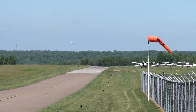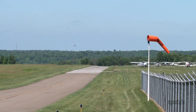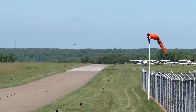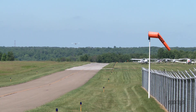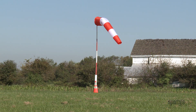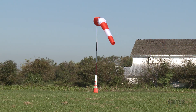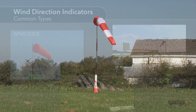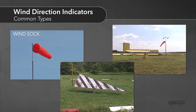It is important that you always take off and land into the wind. Fortunately, most airports have indicators that help you determine the approximate wind speed and direction with a quick glance. The three most common types of wind direction indicators are the wind sock, the wind tee, and the tetrahedron.